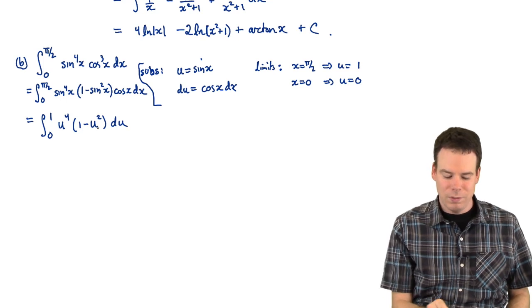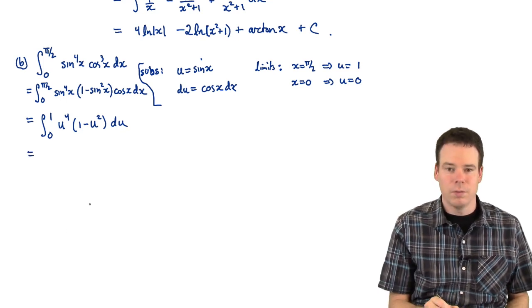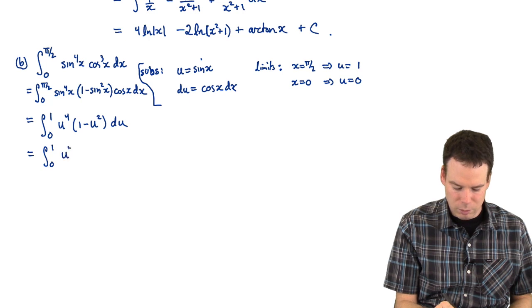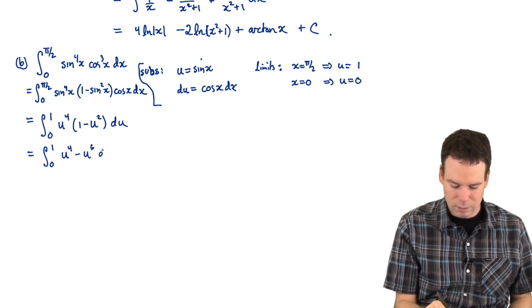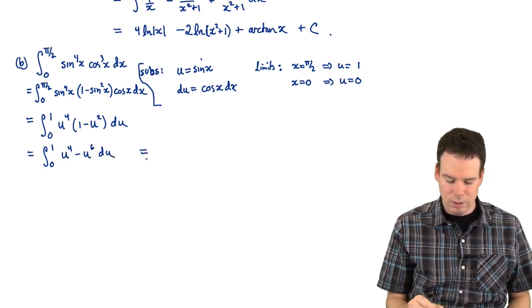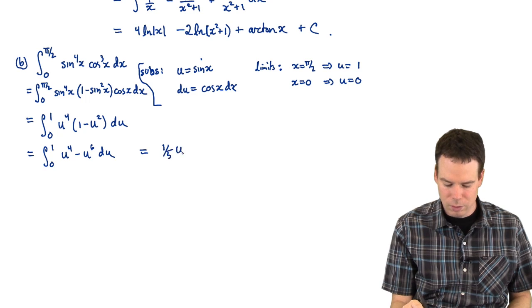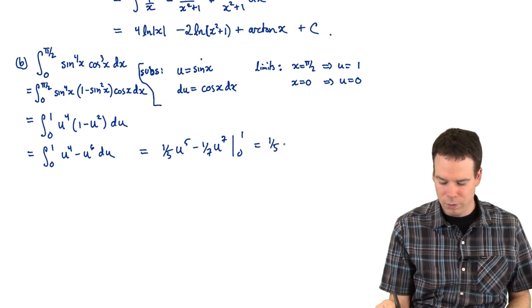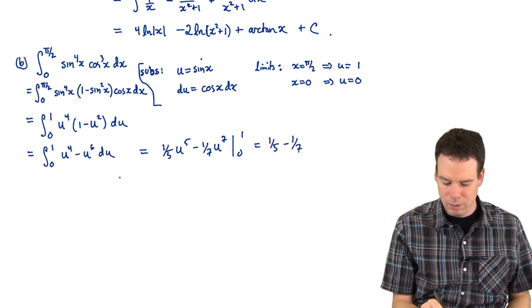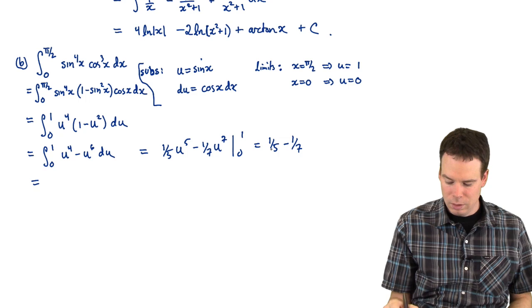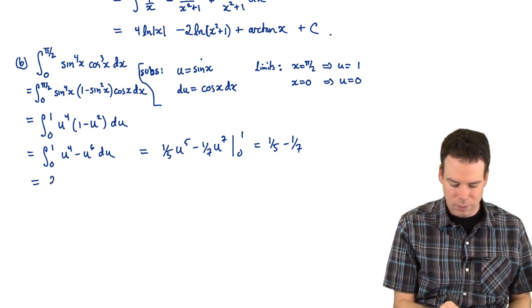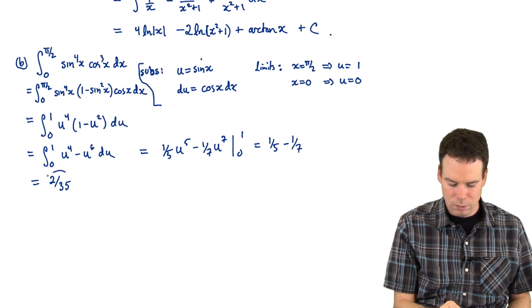So after a substitution, we've now reduced this to an integral of a polynomial. So we can expand this out. That's u to the 4th minus u to the 6th du. And now we can anti-differentiate. That's a 1 5th u to the 5th minus a 1 7th u to the 7th from 0 to 1. Or in other words, 1 5th minus 1 7th. Which is 1 5th is 7 30 fifths minus 5 30 fifths. So the result is 2 30 fifths.